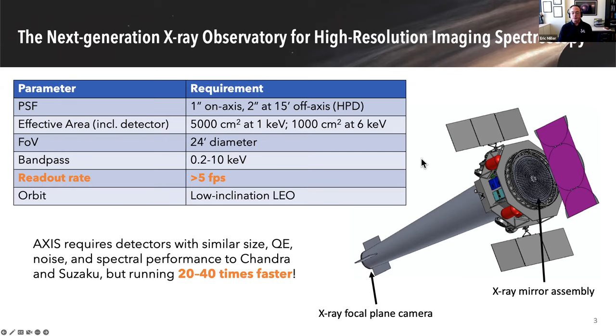This table shows you the requirements for that performance. We have very good spatial resolution across a wide field, very good throughput, about 10 times the effective area of Chandra, a fairly decent field of view, and broad band pass. Any one of these is not too far off from what we've been able to achieve previously. However, combining all of these really presents a challenge for the camera. In particular, we need to be able to run this camera very fast, greater than five frames per second. For comparison, on similar detectors that we've been flying on Chandra for 23 years and on Suzaku, we need to run about 20 to 40 times faster. The performance of those detectors is pretty similar to what we need for Axis, but the speed at which we need to do it is much more demanding.